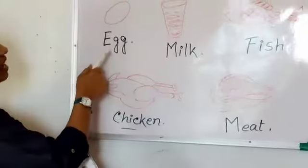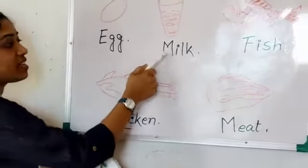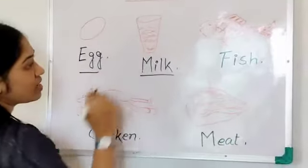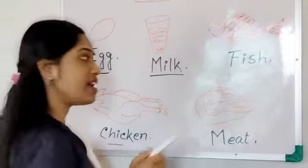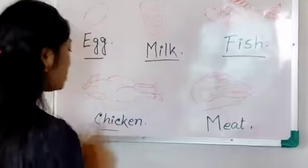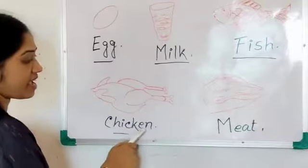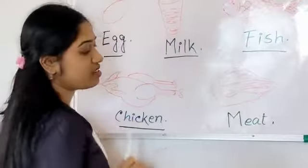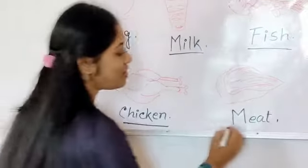Repeat it again. Egg: E-G-G. Milk: M-I-L-K. That is milk. Now, fish: F-I-S-H. That is fish. Chicken: C-H-I-C-K-E-N. That is chicken. And last meat: M-E-A-T. Meat. Okay.